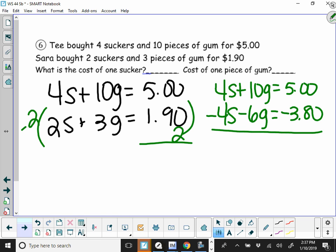When you get done with this, because your S's cancel, you're going to get your price for gum. Subtract right here, that goes here, and then you'll divide by 4. That gives you your price for gum, and then you're going to plug that in to find your sucker.